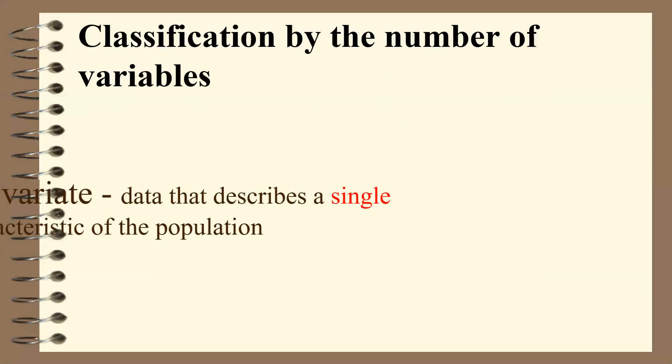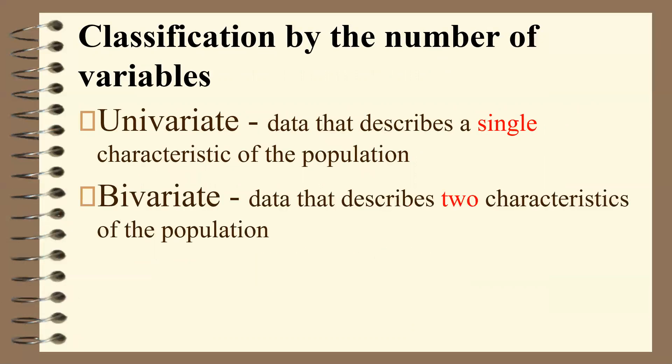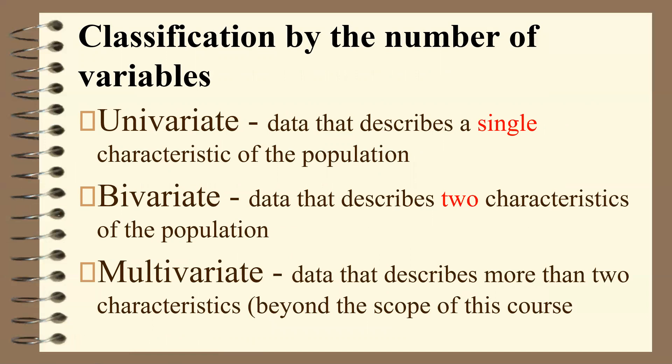Classification by the number of variables: we have univariate data, which represents a single characteristic of the population — 'uni' meaning single. Bivariate data describes two characteristics of the population. And multivariate data describes more than two characteristics.